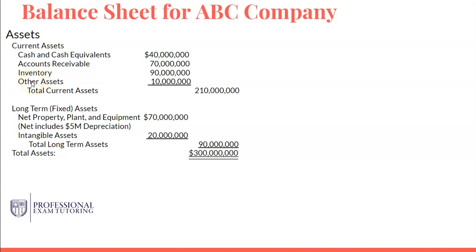Other assets doesn't get much focus on the tests. Once we sum all these assets up we get total current assets — 210 million in this case. Moving down to long-term or fixed assets: the distinction is that current assets are only expected to be on the balance sheet for 12 months or less, so cash and cash equivalents may go up and down within a 12-month period, whereas property, plant, and equipment a business owns is not likely to change as frequently.